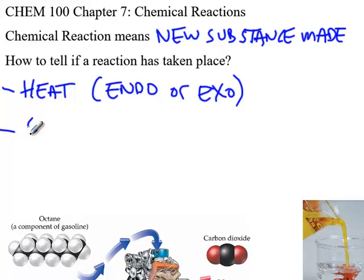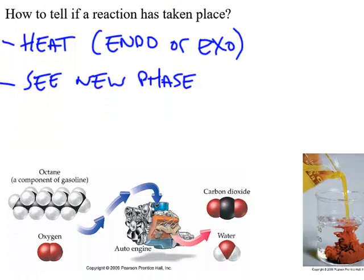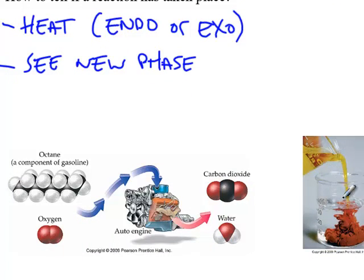We can also see a new phase being created, such as in this picture where we pour a yellow liquid into a colorless liquid and we form a red precipitate. If we let this settle by gravity, this would be a solid on the bottom of the beaker.